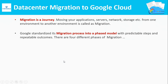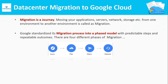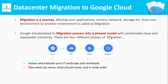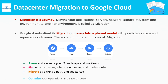Google has standardized its migration process into a phased model and there are about four phases to carry out. The first phase is the assessment phase, which evaluates your IT infrastructure landscape and workloads. Second is the planning phase, that gives us a decision on what to move and what not to. Third is the migration phase, that kick-starts the actual migration. Fourth is the optimization phase, that automates manual jobs to save our costs.